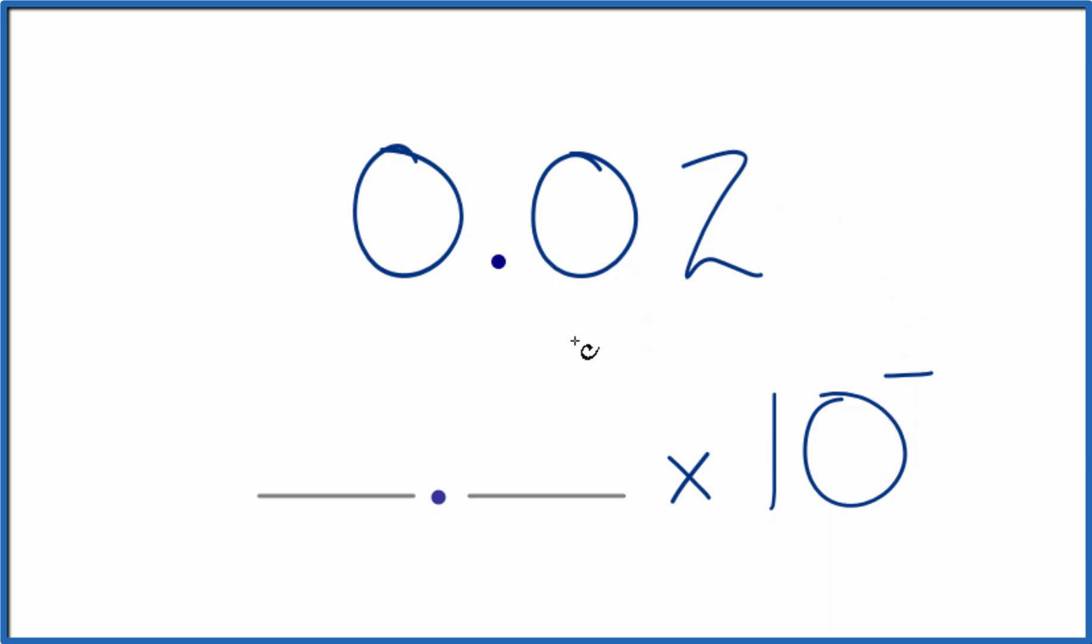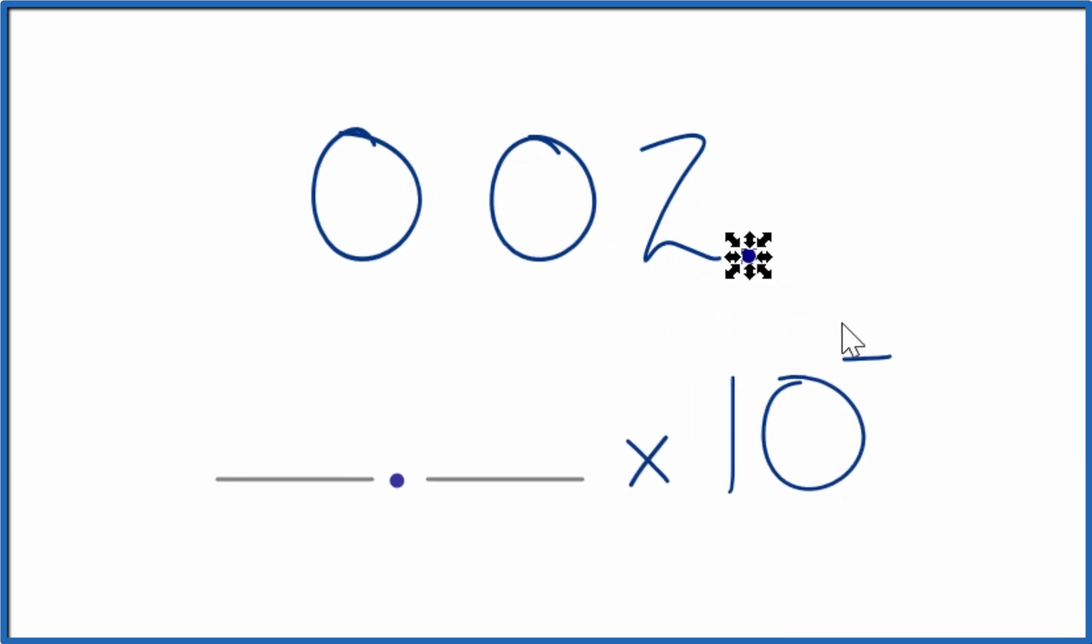What I can do, I can take and move the decimal point one, two. That gives me the whole number. Since I moved it over two, that's going to be two right here.